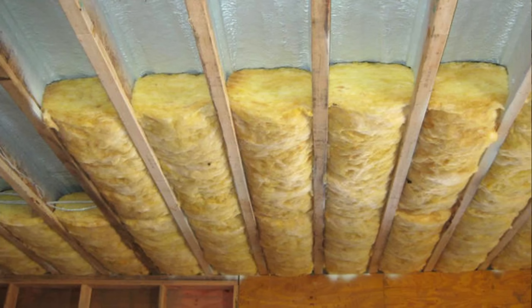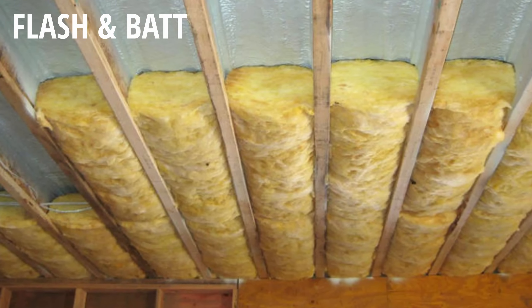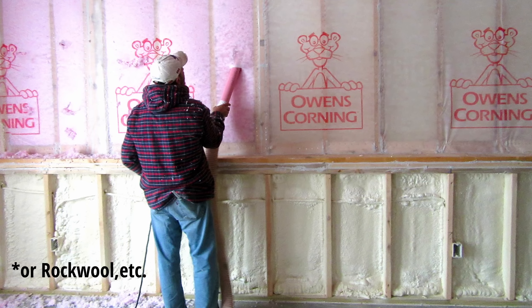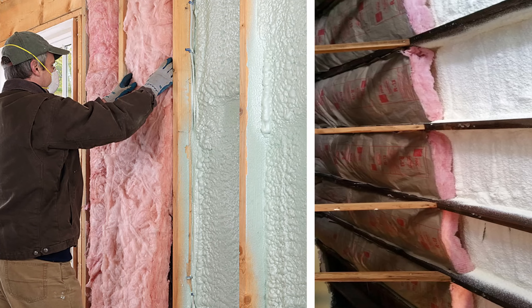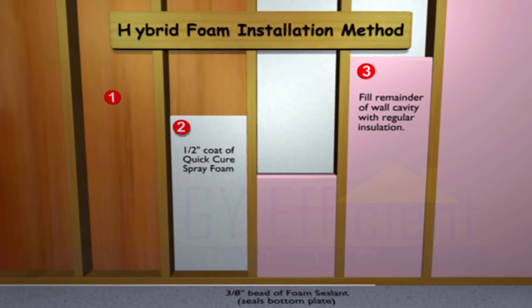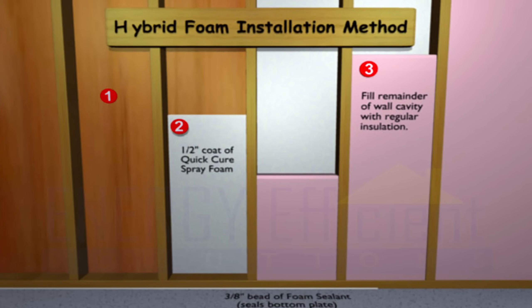Open cell foam should not be used below grade, like in basements, because it is susceptible to water damage. Flash and Bat is a hybrid system where closed cell spray foam and fiberglass are both used to insulate a space. It is more effective than just fiberglass and less expensive than all closed cell spray foam. It is not recommended to use open cell foam for this application.